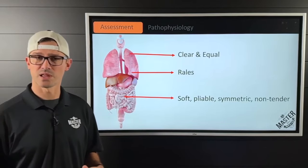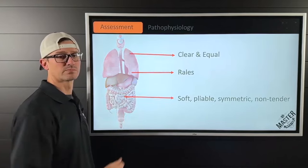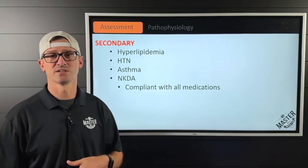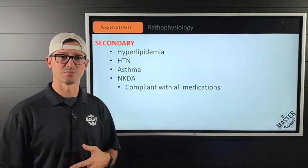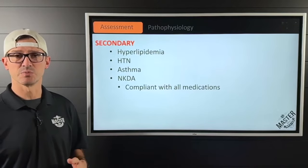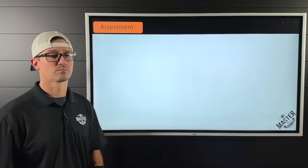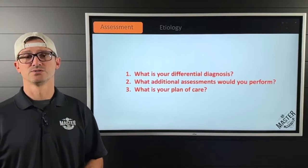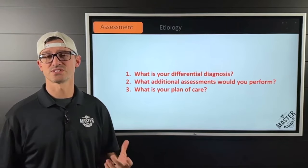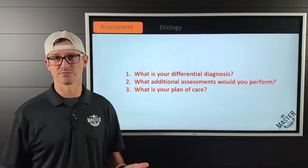His abdomen is soft, pliable, symmetric, and non-tender. He has a history of hyperlipidemia, hypertension, and asthma, with no known drug allergies. He states he is compliant with all of his prescriptions. So you're asked: what is your differential diagnosis? What additional assessments would you perform, and overall what is your plan of care?